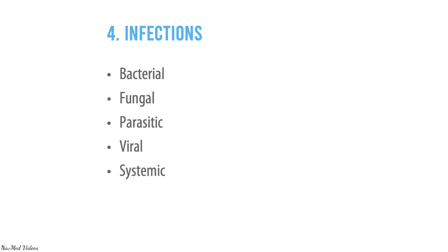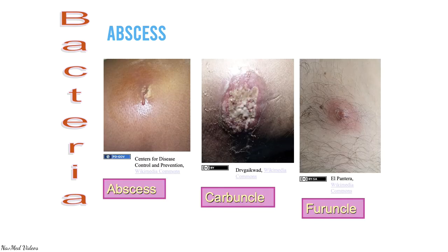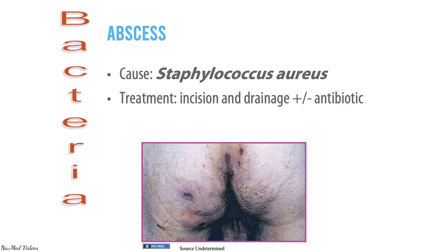Common skin infections presenting as cutaneous emergencies include bacterial, fungal, parasitic, viral, and systemic types. Bacterial abscesses are very common — a collection of pus with inflammation and tissue destruction. A furuncle is a deep-seated red, hot, tender abscess evolved from staphylococcal folliculitis. A carbuncle is a deeper infection of interconnecting abscesses. The most common cause is Staph aureus; treatment is incision and drainage with antibiotic cover.